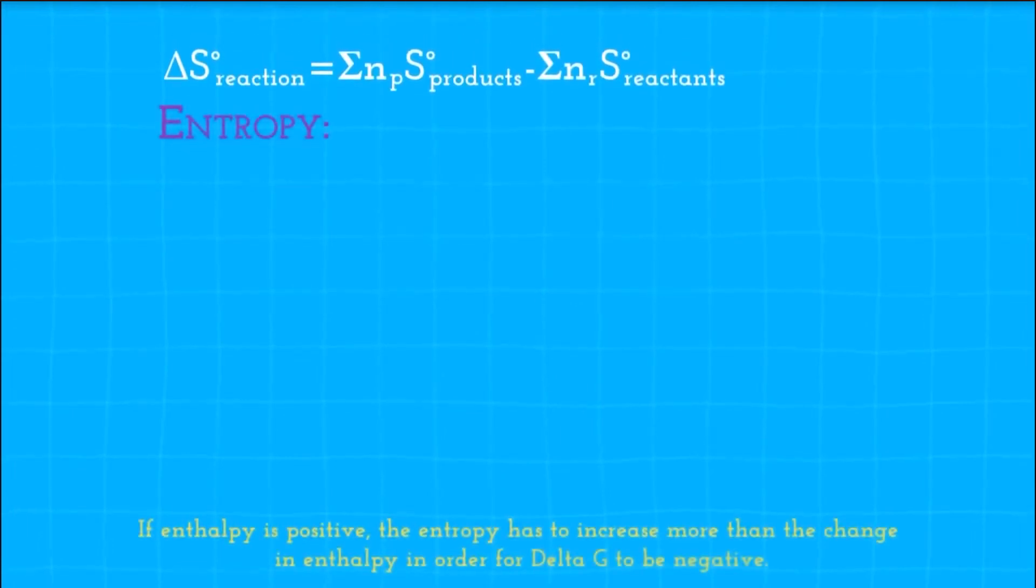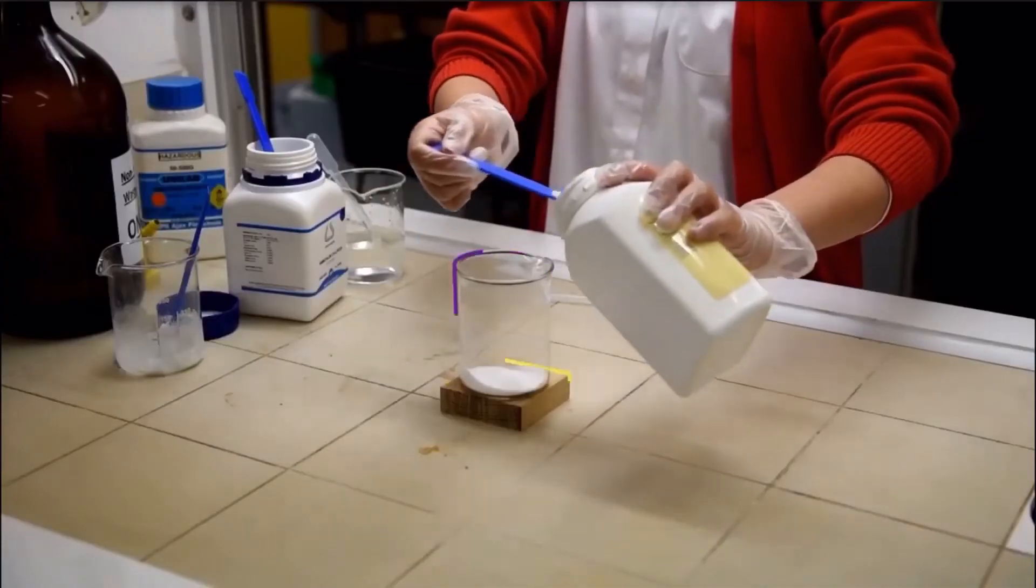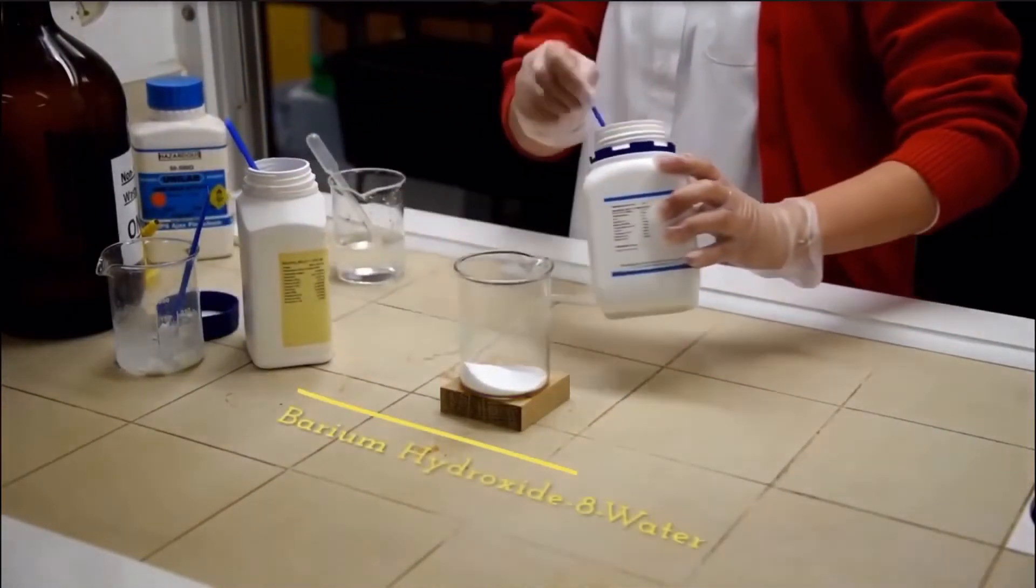In spontaneous reactions, entropy has to be positive. However, enthalpy can be negative or positive. This demonstration shows just that. You can calculate the spontaneity and the increase in entropy.